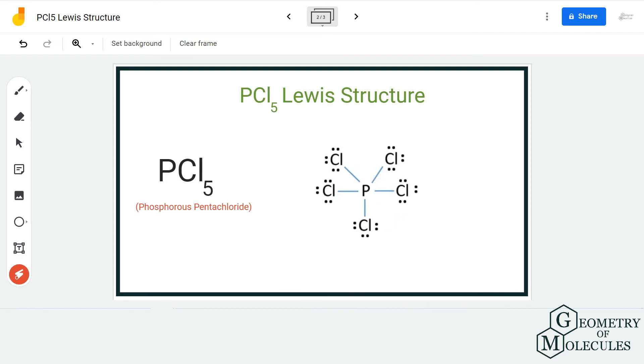You might wonder why it is not abiding by the octet rule, but phosphorus can have an expanded octet, which means it can hold more than eight valence electrons in its outermost shell. Hence, there are 10 valence electrons for the phosphorus atom.